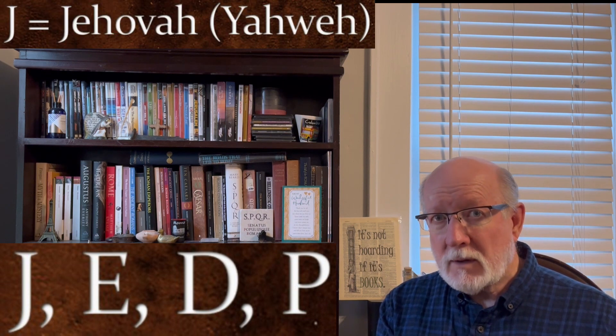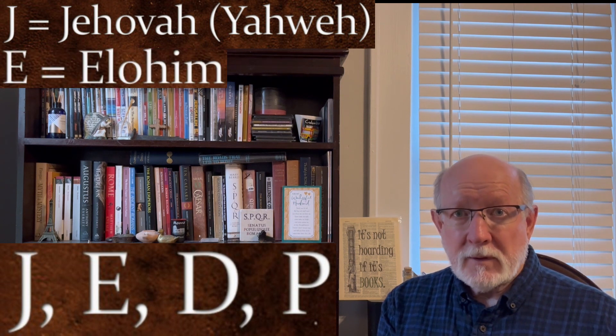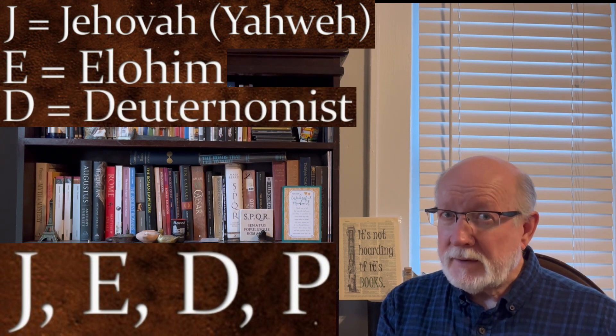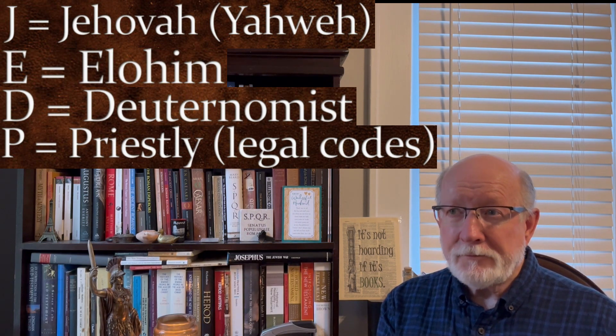In short, the documentary hypothesis held that the Torah was not authored by a single person, Moses, but rather was a compilation of at least four other sources, indicated by the letters J, E, D, and P. J for when the author preferred the name Yahweh, E for the author preferring the name Elohim, D for the Deuteronomist, and then P for the priestly or legal or law code elements of the Torah. Each of these letters therefore stood for an author that were later combined around the 5th century BCE to form the Torah.